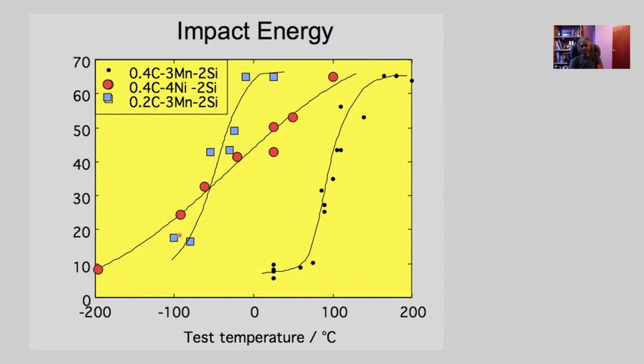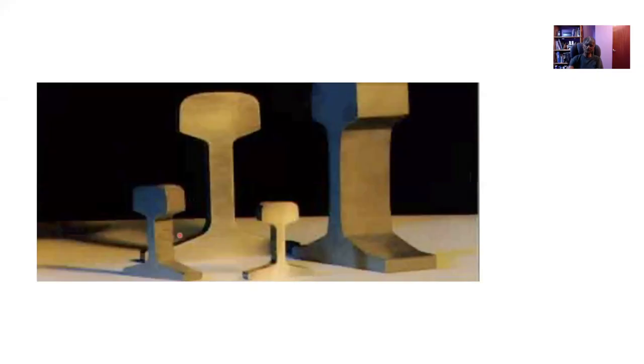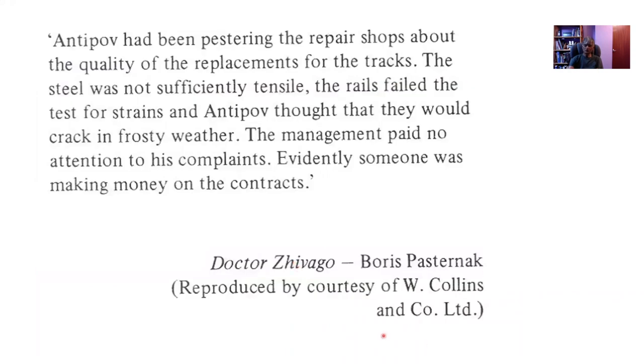These are tough steels now. Of course they are also strong because of the fine structure, so we thought we could make rail steels out of this material. These are typical rail steels - a large rail and a small rail. Normal rail steels suffer from toughness - you can make them as hard as you like but the toughness is not so good. This is a quote from Boris Pasternak's Dr. Zhivago where it says Antipo the engineer had been pestering the repair shops about the tracks - the steel wasn't sufficiently tensile, the rails failed the test for strains, and Antipo thought that they would crack in frosty weather. That's a reflection of the toughness.